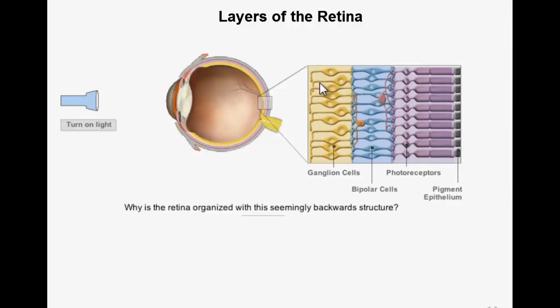Light is absorbed first by the photoreceptors, the backmost layer, and then signals are sent to the brain in the reverse direction. Watch as this animation shows the direction light travels, followed by the direction of the neural signal.